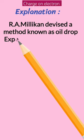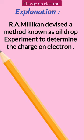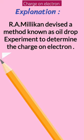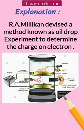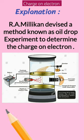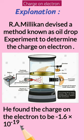Millikan devised a method known as the oil drop experiment to determine the charge on the electron. Millikan naam ke scientist ne ek experiment kiya — oil drop experiment — to determine the charge on the electron. Is experiment se Millikan ne observe kiya ki the smallest charge on the electron is minus 1.6 into 10 to the power minus 19 coulomb.